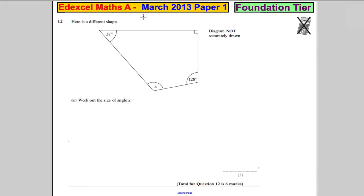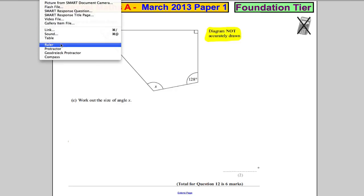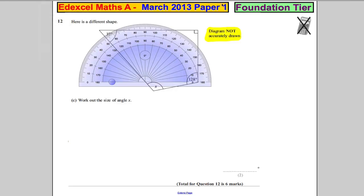Here is a different shape. Work out the size of angle x. Now the first thing you've got to do is look very carefully at this information - it's vital. It says the diagram is not drawn accurately. You are not, and I repeat, not supposed to get your protractor out and measure the thing because it's not an accurate drawing.